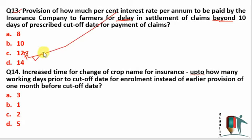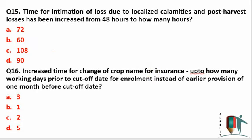Next question: increased time for change of crop name for insurance is up to how many working days prior to the cut-off date? Earlier it was one month, but now it has been reduced to only two working days. So around two days before the cut-off, you can still change the name of the crop for insurance purposes.